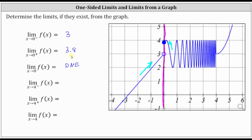For the next three limits, we are approaching x equals four. So let's go ahead and erase our work and sketch a vertical line at x equals four.